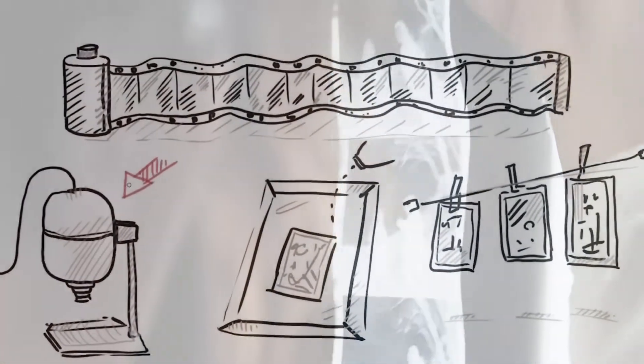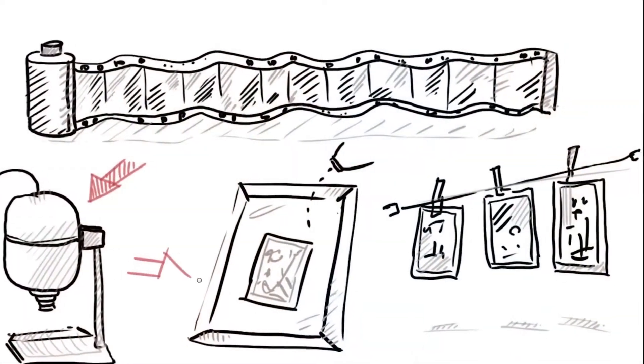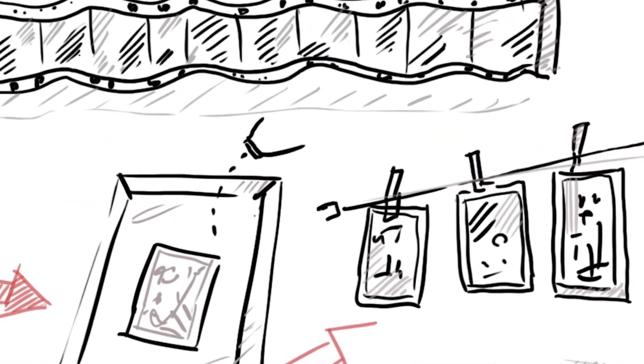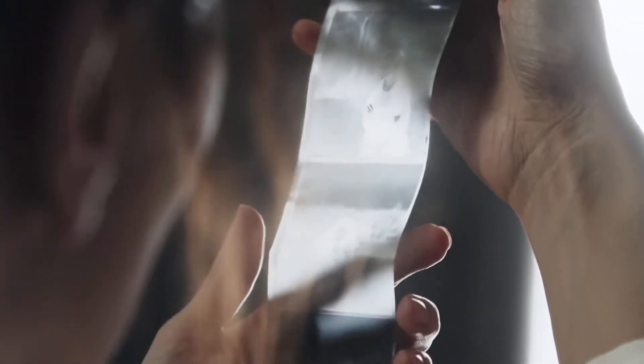Until about 30 years ago, taking a picture involved many steps and skills before a copy could be developed from a negative. The process we refer to today is analog photography. In the meanwhile, digital photography and software have radically simplified both the production and post-processing of images.